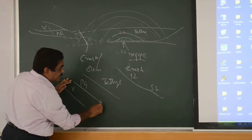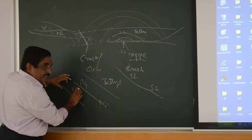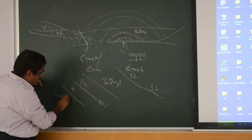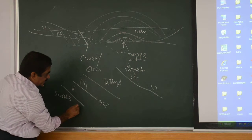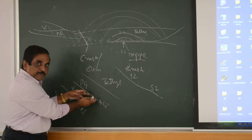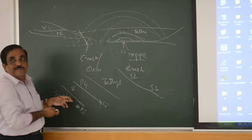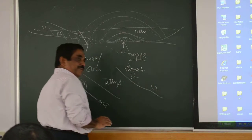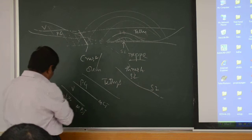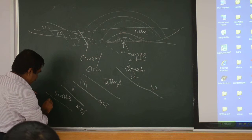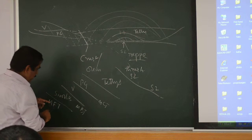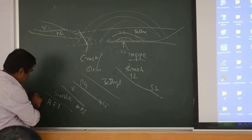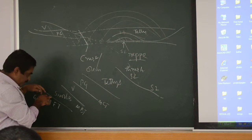Then the Proterozoic rocks and this part — this will be Siwaliks. So this is your MBT. So MCT will happen earlier, then MBT will come. That is the reason why all these thrusts activated and developed subsequently. Then after the Siwaliks comes your MFT, or HFT — the Himalayan Frontal Thrust. Then the Ganges will come and be affected as the Himalaya is growing.